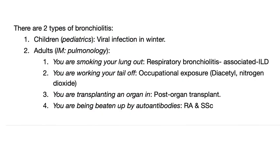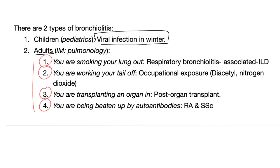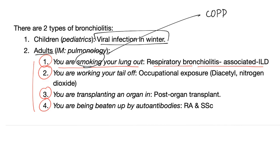There are two types of bronchiolitis. Children — viral infection in the winter. Or it can happen to adults. Here is my mnemonic — I'm not making fun of patients, I'm trying to make medicine easy for medical students so they can help patients. Number one: you're smoking your lungs out — translation: respiratory bronchiolitis-associated interstitial lung disease. That's why smoking can lead to an obstructive lung disease such as COPD, or a restrictive lung disease such as respiratory bronchiolitis-associated interstitial lung disease.